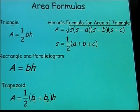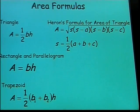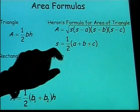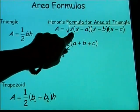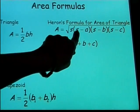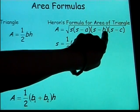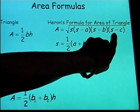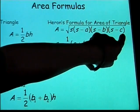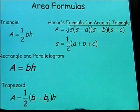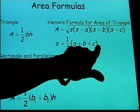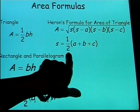If we don't know the height of the triangle, we can use something called Heron's formula, which allows us to calculate the area using the sides of the triangle. Heron's formula is: A equals the square root of s times (s minus a) times (s minus b) times (s minus c), where a, b, and c are the three sides. S is one-half the perimeter of the triangle, found by adding the three sides together.